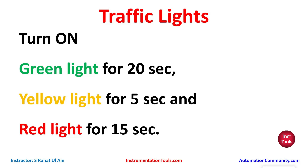For the green light we will use TP, so it will be on for 20 seconds. For yellow, we will first use TON which delays for 20 seconds, then TP to keep yellow on for 5 seconds. For red, we will use TON that delays for 25 seconds — during which green and yellow are on — and then TP to keep red on for 15 seconds.